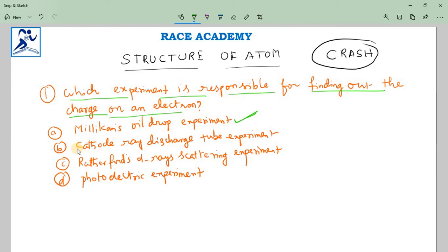Because in that experiment, oil drops in the form of mist produced by an atomizer were allowed to pass through a chamber with ionized air. The electric charge on these oil drops was acquired by collisions with gaseous ions. Then, by carefully measuring the effects of electrical field strength on the motion of oil drops, Milliken measured the charge on the droplet. So this is the actual idea about Milliken oil drop experiment.